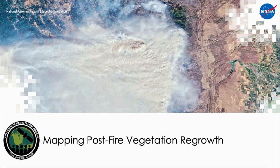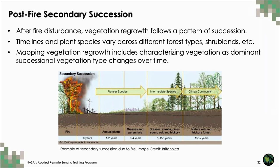Moving on to mapping of post-fire vegetation regrowth, I want to provide some context. Fire disturbance within vegetated ecosystems prompts secondary succession — the process of plants reestablishing themselves in a habitat after it has burned. The process and timeline of this reestablishment varies across different ecosystems. In the case of forests, a simplistic progression could include first colonization by grasses, then shrubs and young trees, and then ultimately mature forest.